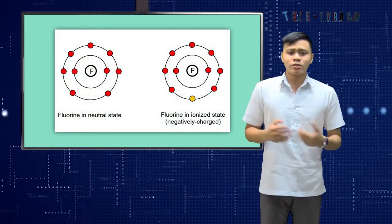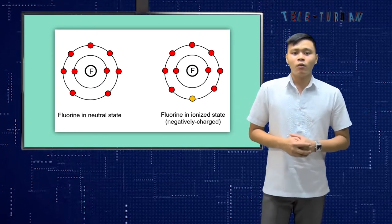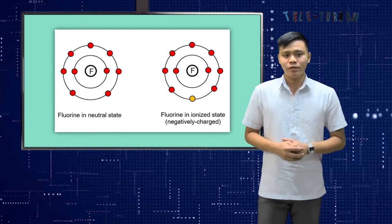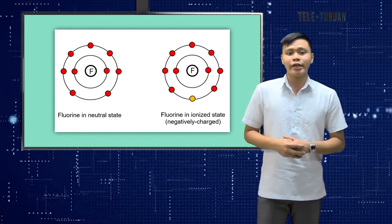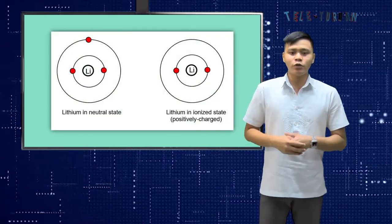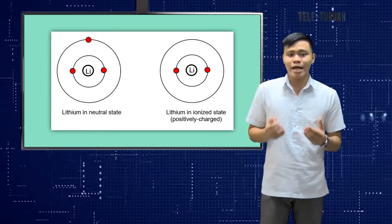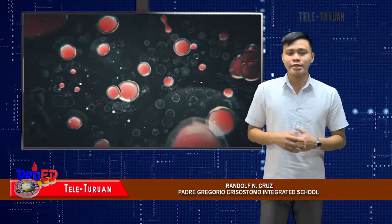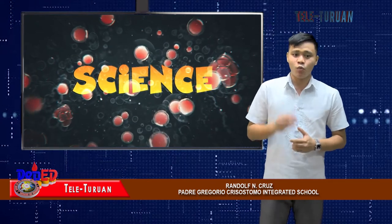To illustrate atoms from their neutral state to their ionized state, we make use of the Bohr model of an atom. This is the illustration of fluorine in a neutral state and fluorine in its ionized state, or negatively charged. And this is how lithium looks in its neutral state and its ionized state, or positively charged. Please stay tuned for the second part of our discussion on the formation of ions. We will be right back.